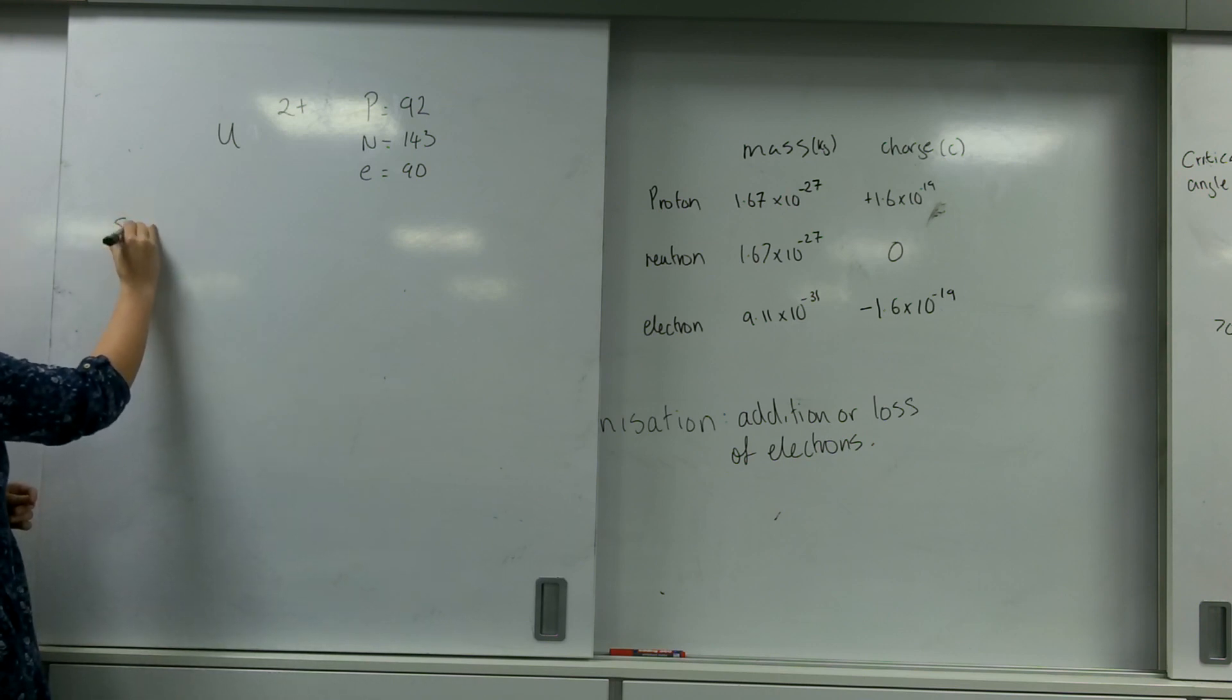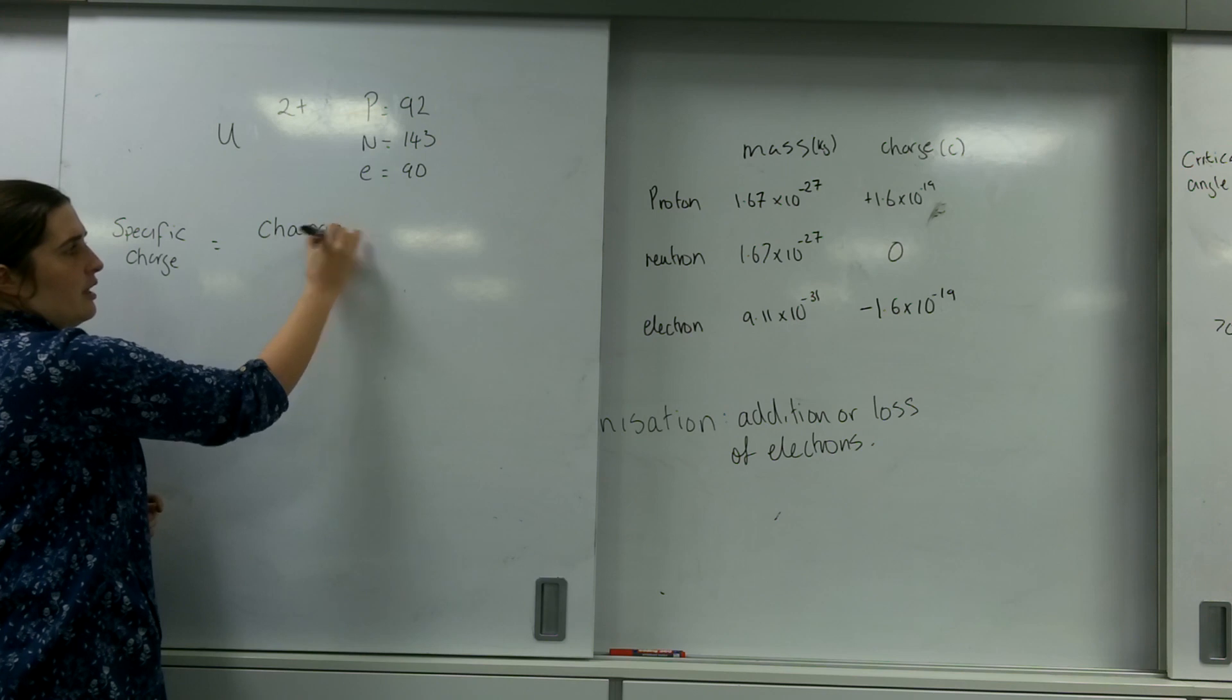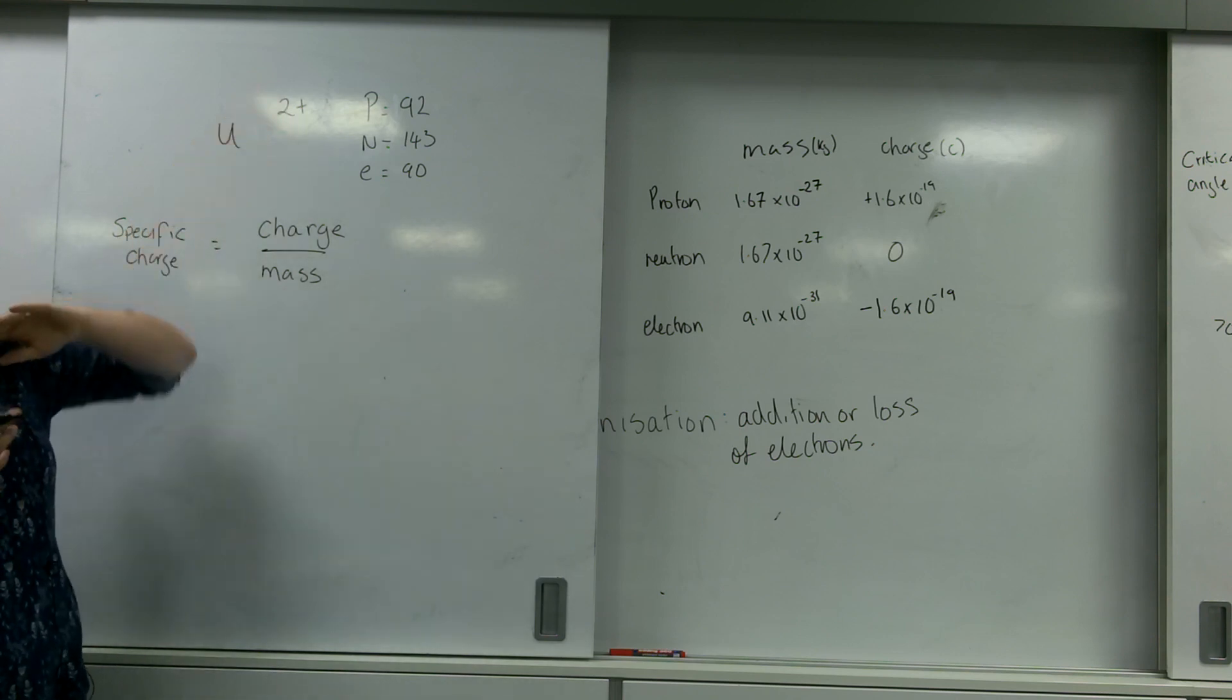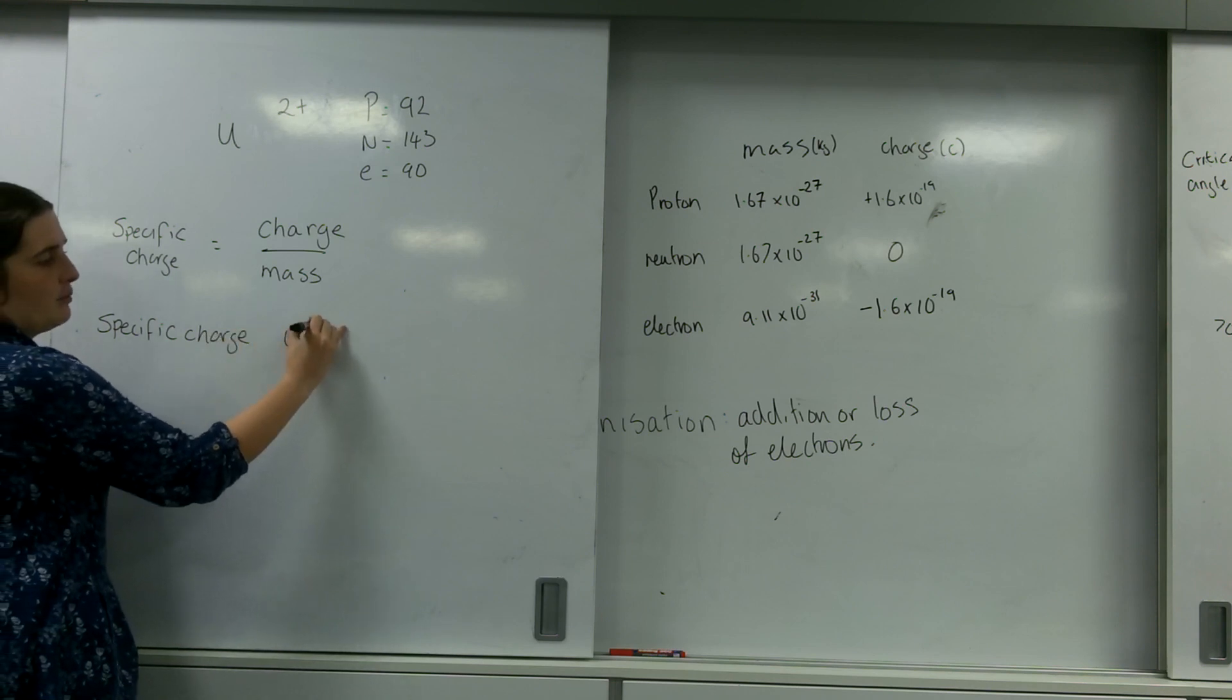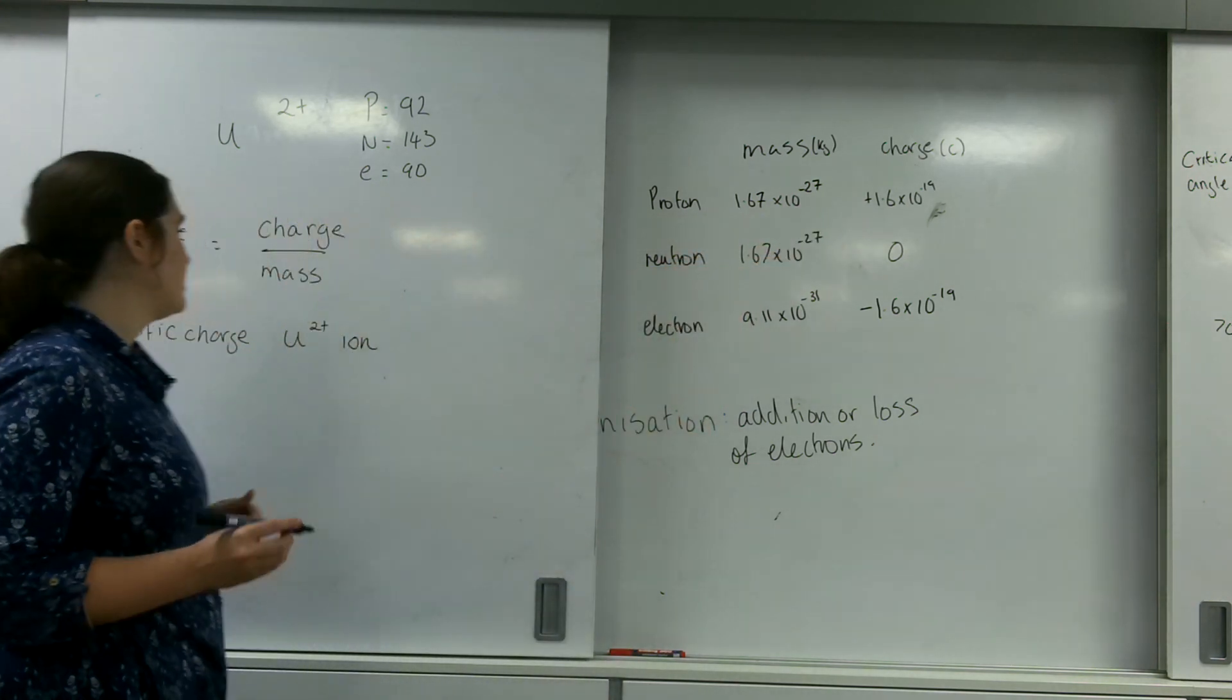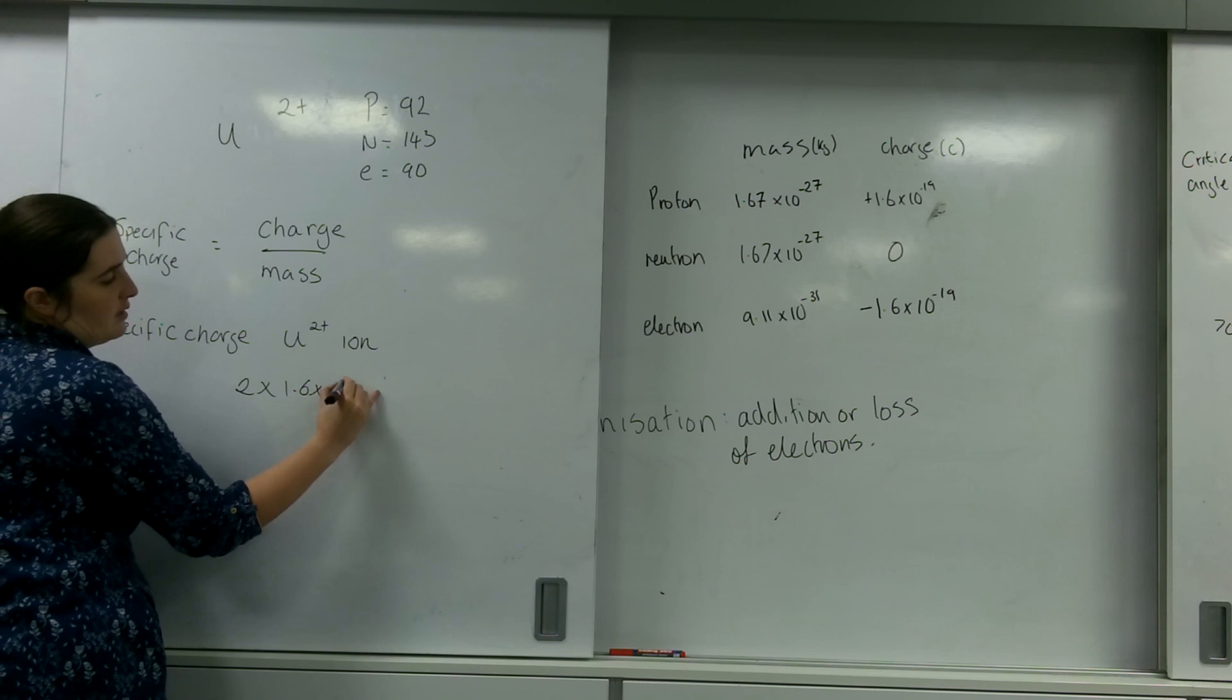So, specific charge is charge divided by the mass. It's how much charge I have for a particle or an atom. Now, what I'm going to do is this object is 2+ charge. This has 2 positives. So, I'm going to be doing the specific charge of uranium 2+ ion. So, it's charge. I've got 2 positives. So, look at this table over here. My proton has a charge of positive 1.6 times 10 to the minus 19, and I've got 2 extras. So, my charge is 2 times 1.6 times 10 to the minus 19.